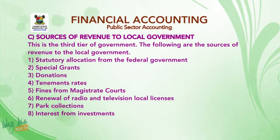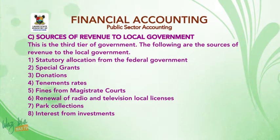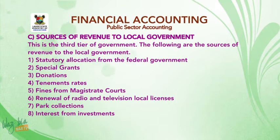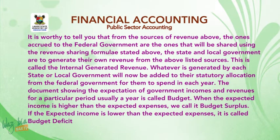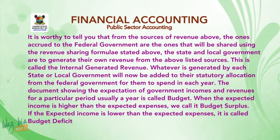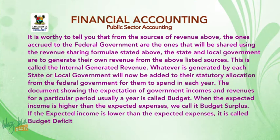C, sources of revenue to local government — the third tier of government: one, statutory allocation from the federal government; two, special grants; three, donations; four, tenement rates; five, fines from magistrate courts; six, renewal of radio and television local licenses; seven, park collections; eight, interest from investments. It is worthy to note that the revenues accrued to the federal government are shared using the revenue sharing formula. The state and local governments are to generate their own revenue from listed sources — this is called internally generated revenue. Whatever is generated by each state or local government is added to their statutory allocation from the federal government.